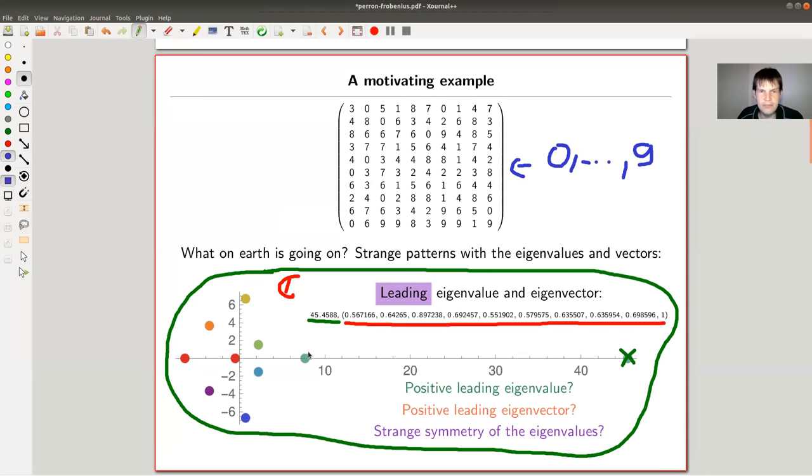So you have certain patterns along the eigenvalues. So like here, you see like those four things kind of lie on a circle. Right? So strange patterns. Strange patterns, positive leading eigenvector, positive leading eigenvalue. So this can't be a coincidence because you just picked out a 10 by 10 matrix with reasonably random entries.